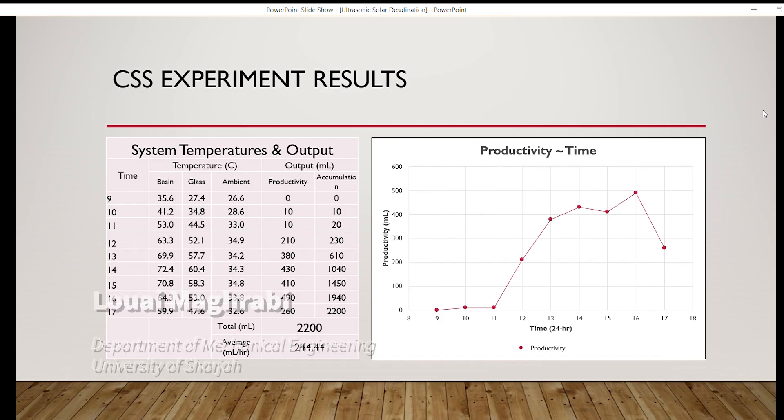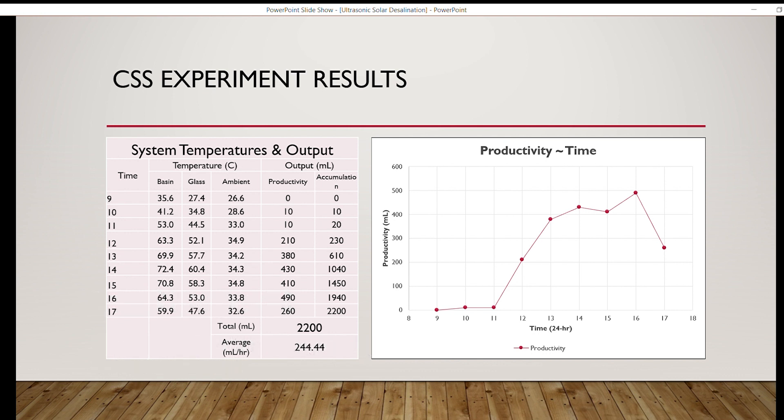The first test performed is the conventional solar still test where the hourly productivity profile is shown in front of us. In addition to the system temperatures, and that includes the temperature of the basin and glass, it is also important to measure and record the ambient temperature since weather plays a role in affecting the results.